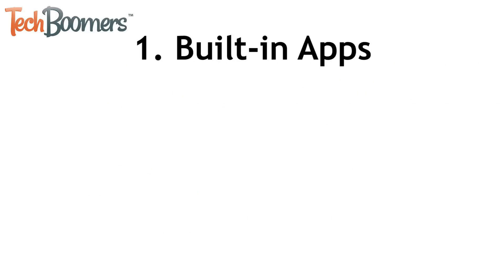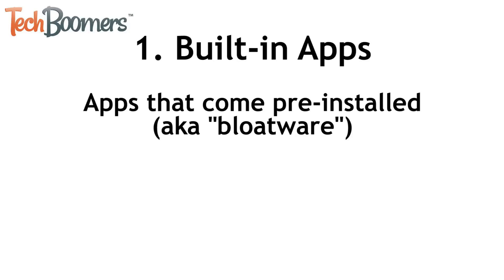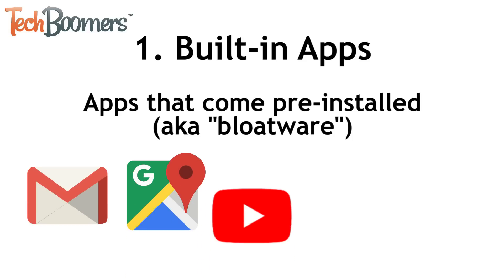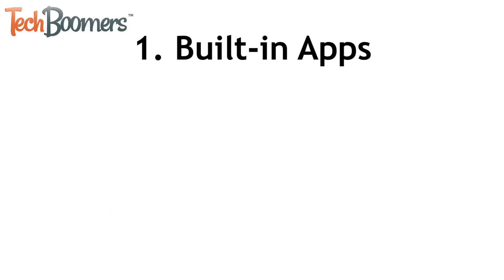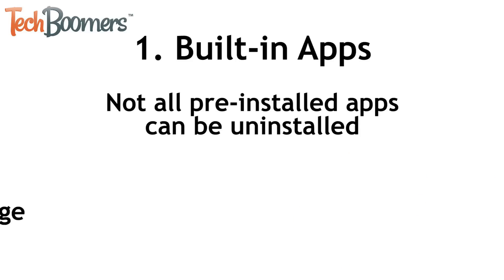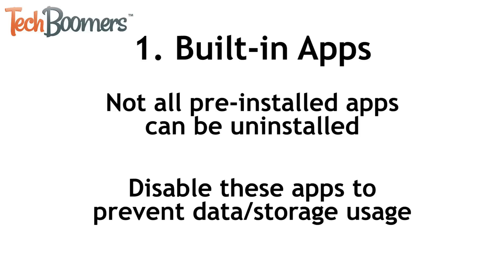The first type of app you should get rid of are the built-in apps that come pre-installed on your device, also known as bloatware. On Android, there are several Google apps that come pre-installed including Gmail, Google Maps, YouTube, Google Plus, and more. We'd recommend getting rid of the ones you aren't using. Not all pre-installed apps can be uninstalled, but you can disable them to remove them from your home screen and ensure that they won't use any additional storage space or data. A list of pre-installed apps we'd recommend deleting will be in the description box below.